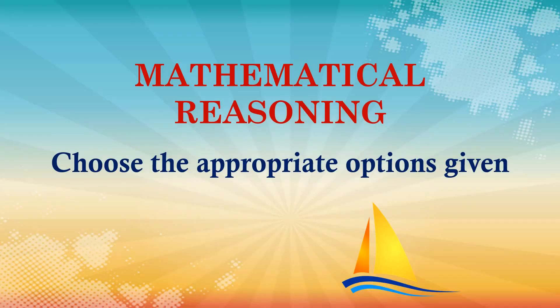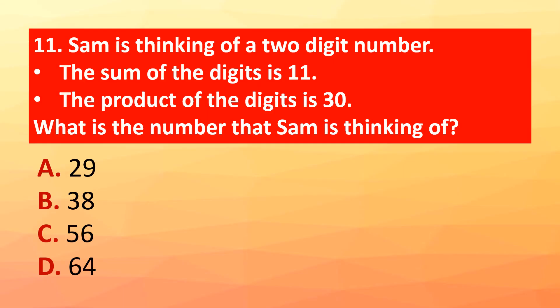Mathematical Reasoning — choose the appropriate options. Question 11: Sam is thinking of a two-digit number. The sum of the digits is 11 and the product of the digits is 30. What is the number Sam is thinking of? The correct answer is option C: 56.